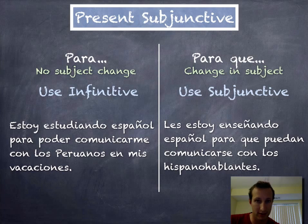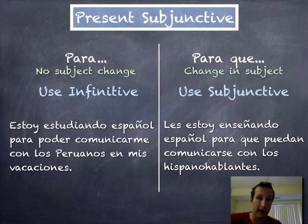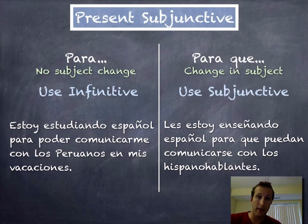That's going to be subjunctive because there's a change in subject. Anytime the first part of the sentence before 'para' is one subject and after it's a different subject, you use 'para que'. If it's the same subject — it doesn't matter which subject it is, it could be yo, él, tú, nosotros — if it's the same subject, 'para'; if there's a change, then it's 'para que'.